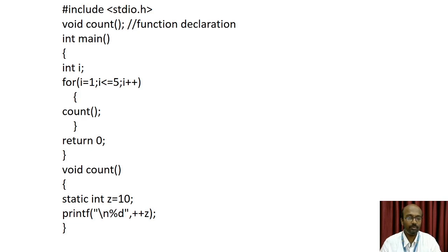We have a for loop: for i equal to 1, i less than or equal to 5, i plus plus. Inside the loop we make a function call to count(). In the function definition, void count(), we have declared a static integer variable z equal to 10.